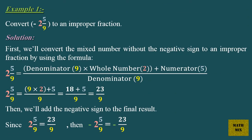Example 1. Convert minus 2 and 5 ninths to an improper fraction. Solution. First, we'll convert the mixed number without the negative sign to an improper fraction by using the formula.